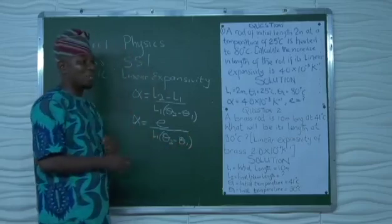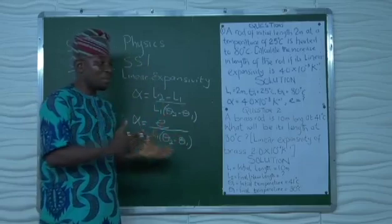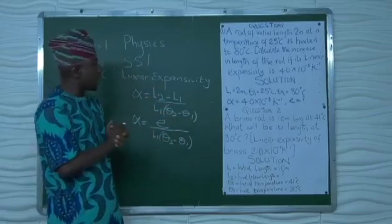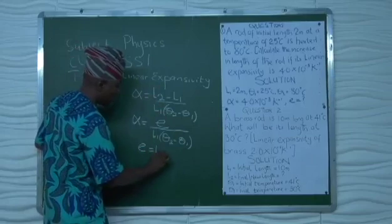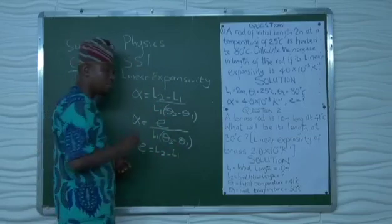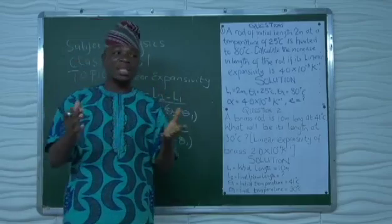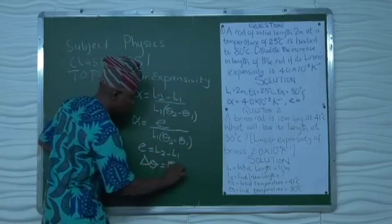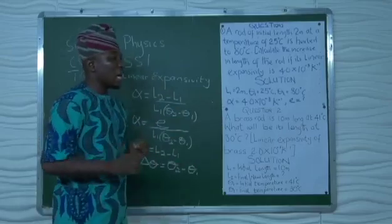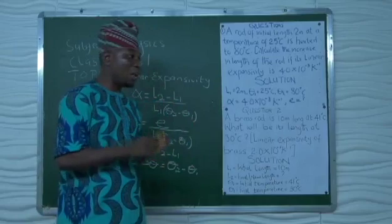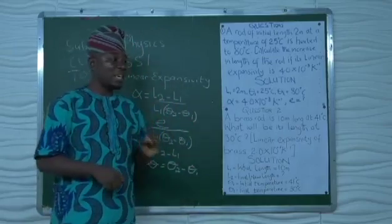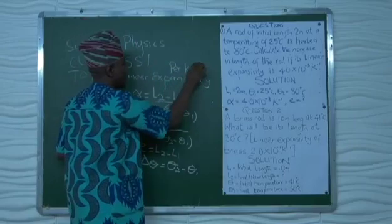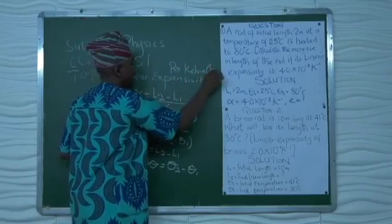E stands for extension. Extension simply means the difference between the new length and the original length, which can be written as E equal to L2 minus L1. We also have the change in temperature, written as delta theta equal to T2 minus T1. Linear expansivity has its unit, and the unit of linear expansivity is per Kelvin.